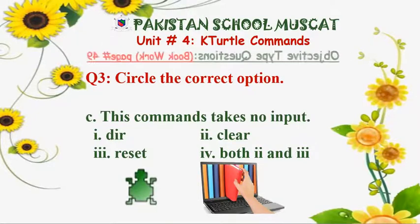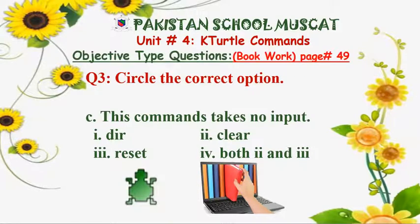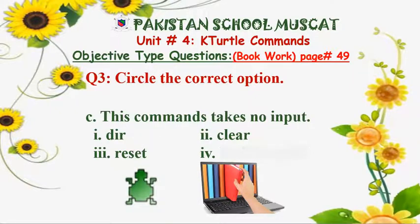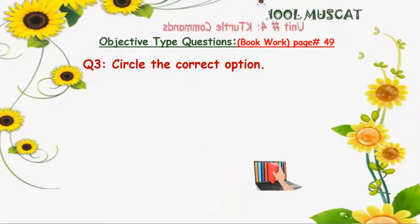Part C: this command takes no input — we just discussed this in the recap. With the dir command we always write a number, but for clear and reset we never give a number along with it. So the correct option is both first and second. You can put a circle around it with a color pencil or put a tick in front of it.